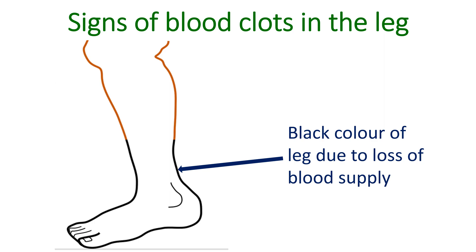This occurs when the block happens abruptly. In a gradually progressing obstruction, one first notes pain in the legs on walking — claudication. This pain subsides with rest and recurs on walking. The distance at which pain starts is an important indication of the severity of obstruction; more severe obstructions produce pain after walking only a short while.